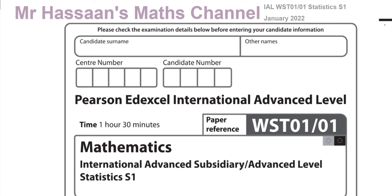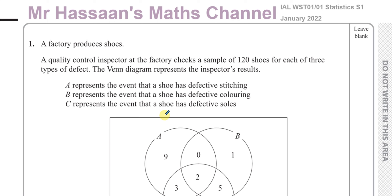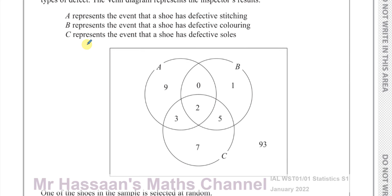The first question is about probability and Venn diagrams. It tells us about a factory which produces shoes. A quality control inspector checks a sample of 120 shoes for each of three types of defect, and the Venn diagram represents the inspector's results. A represents defective stitching, B represents defective coloring, and C represents defective soles.